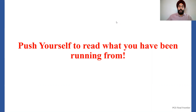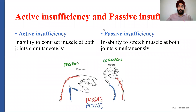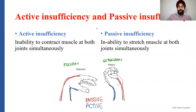Moving on to the last topic of this class, which is active insufficiency and passive insufficiency. It's a very important concept when talking about biomechanics and covering all the basics in the musculoskeletal examination. This is an important concept in terms of questions, examination, and sometimes in terms of interventions also. So let's look at the definitions of active and passive insufficiency.